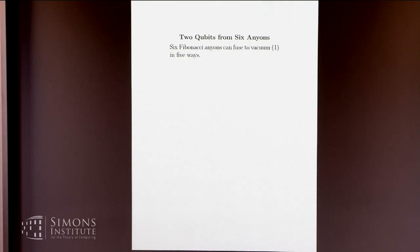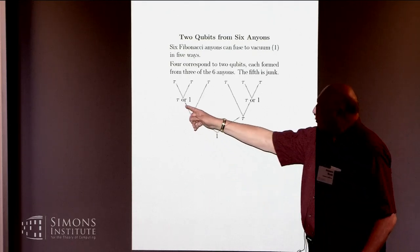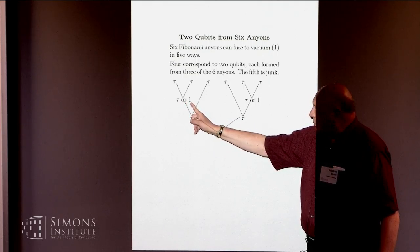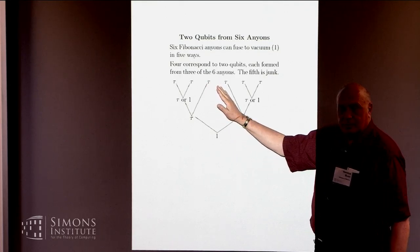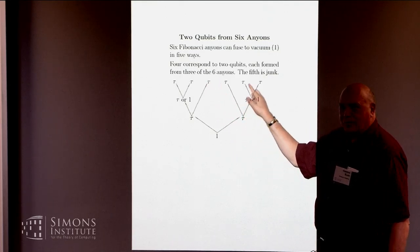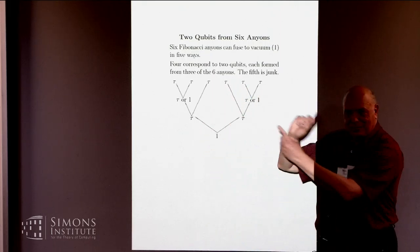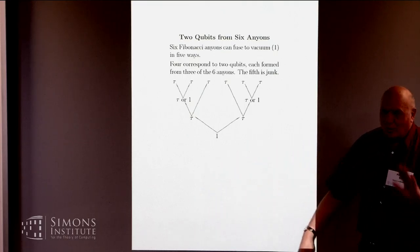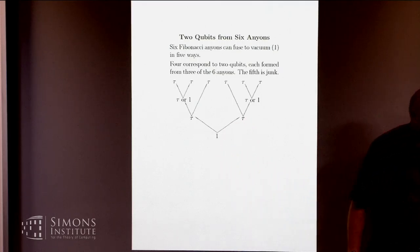Those six anyons fusing to vacuum can give you two qubits. I, again, got tired of drawing pictures. So the four good options are you could have either a tau or vacuum here and still end up with a tau. That's your first qubit. Same for your second qubit. This one's drawn backwards, fusing the right half instead of the left half. That's because this is a conference on symmetry, and I want the picture to be symmetric. You could do it the other way, but I like to do it this way. And then these two fuse to vacuum at the end.